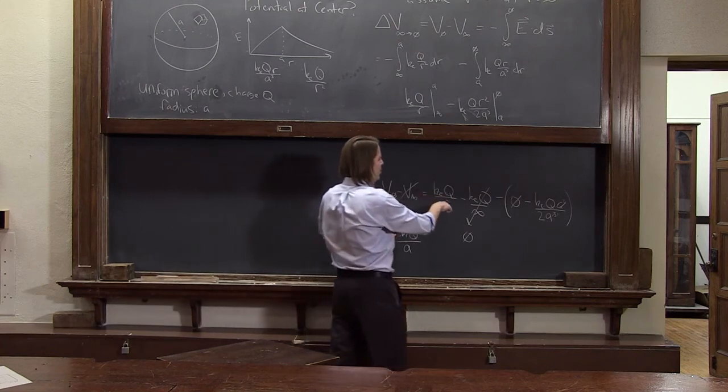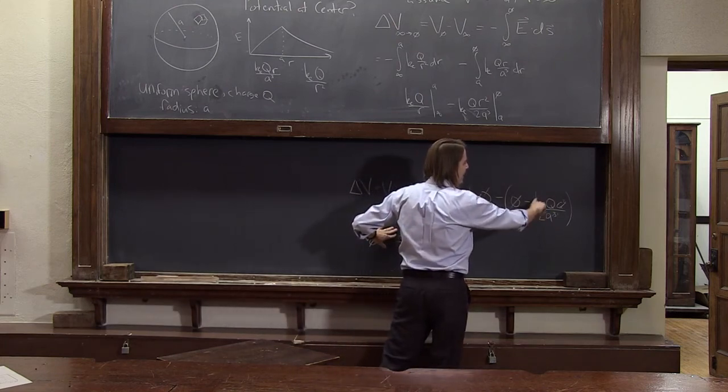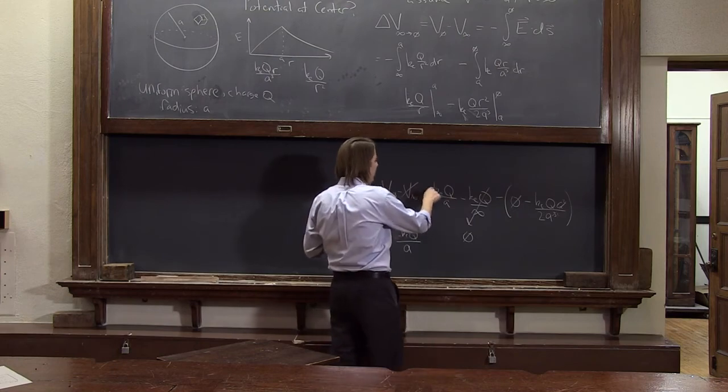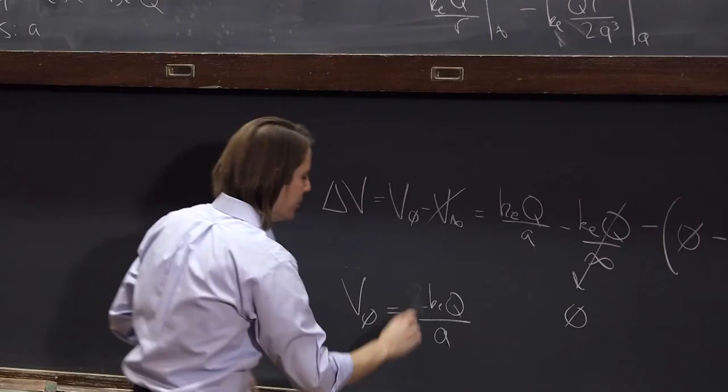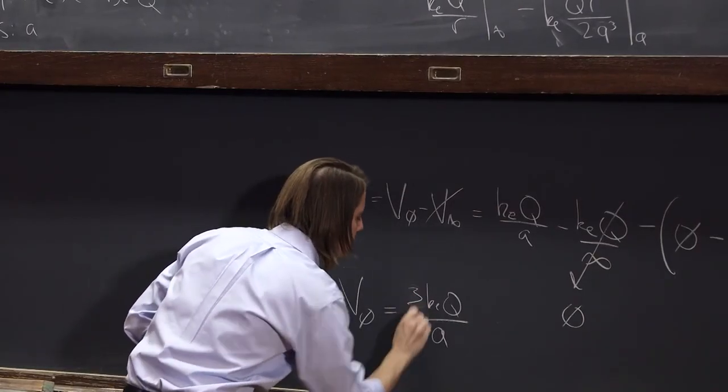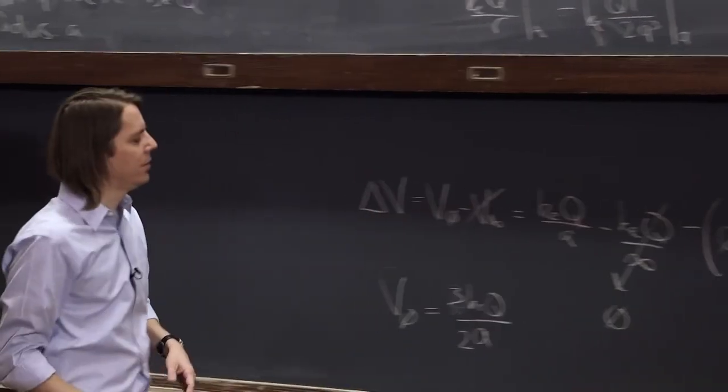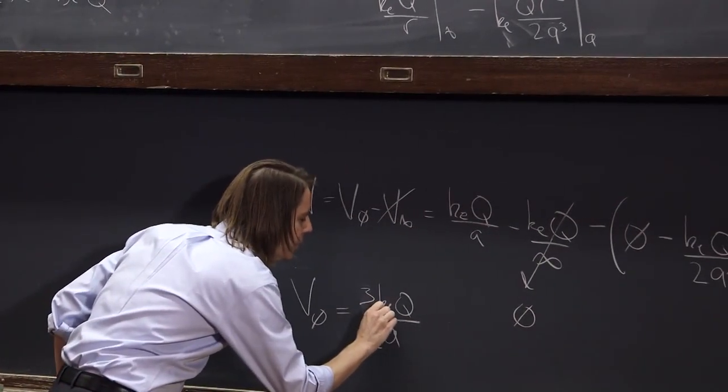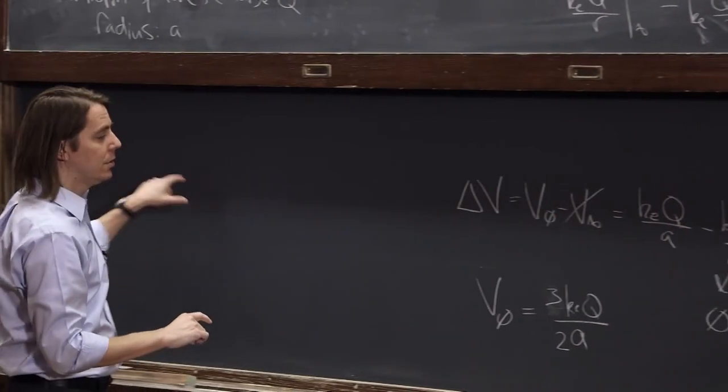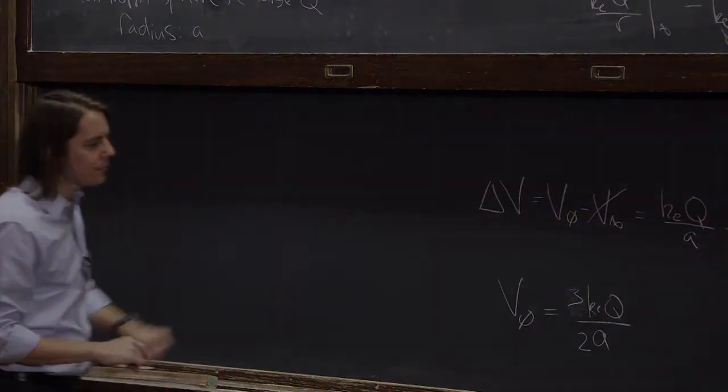And a 3 does show up now, because we have KEQ over A, and basically a half of that, KEQ over 2A. So when we combine them, this is 2 over 2. So 2 plus 1 is 3, so it's 3 KEQ over 2A. And then that is the total potential at the center of the sphere.